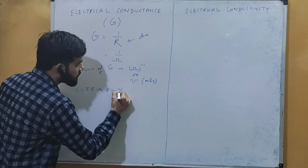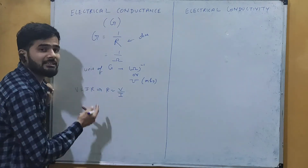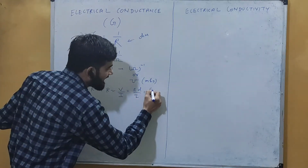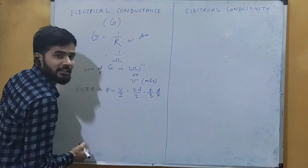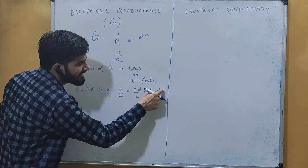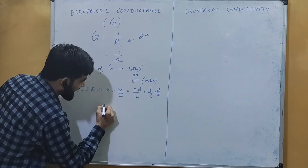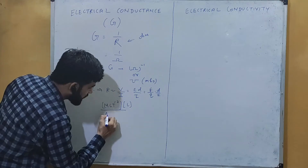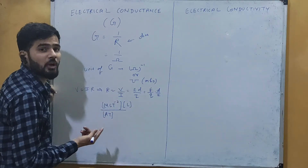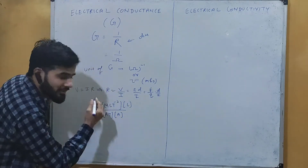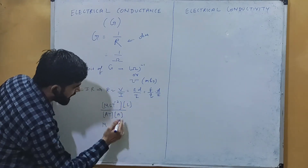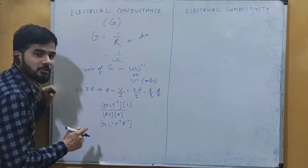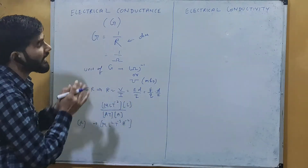To find the dimensional formula of resistance, we start with V = IR, so R = V/I. Writing V as E·d, and E as F/q, we get R = (F·d)/(q·I). Substituting dimensions: force is MLT⁻², distance is L, charge q = AT, and current is A. This gives the dimensional formula of resistance as ML²T⁻³A⁻².